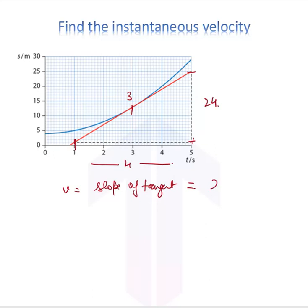The slope of the tangent is rise upon run, so that gives me 6 meters per second. This is the instantaneous velocity at exactly 3 seconds, 6 meters per second, because we found the slope of the tangent.